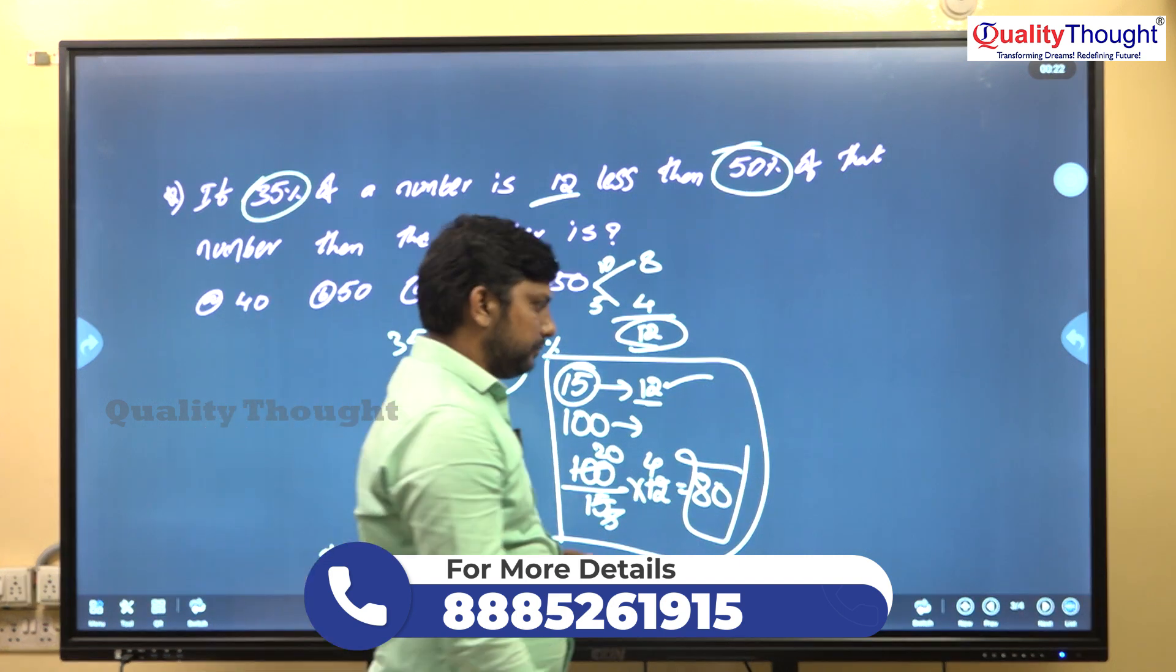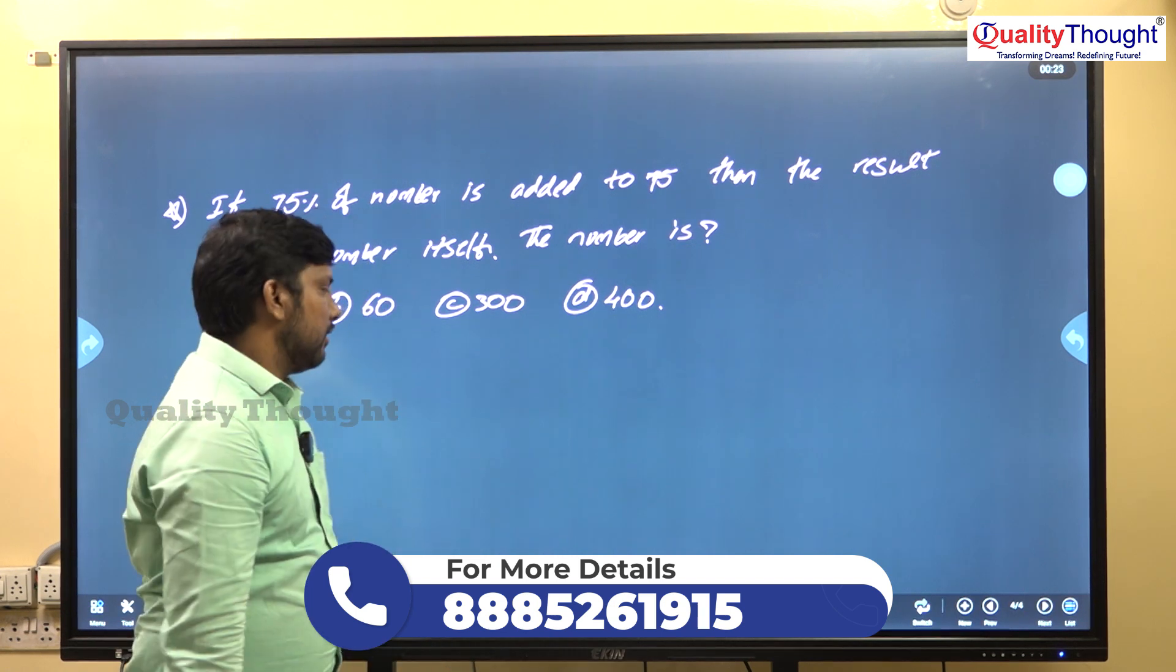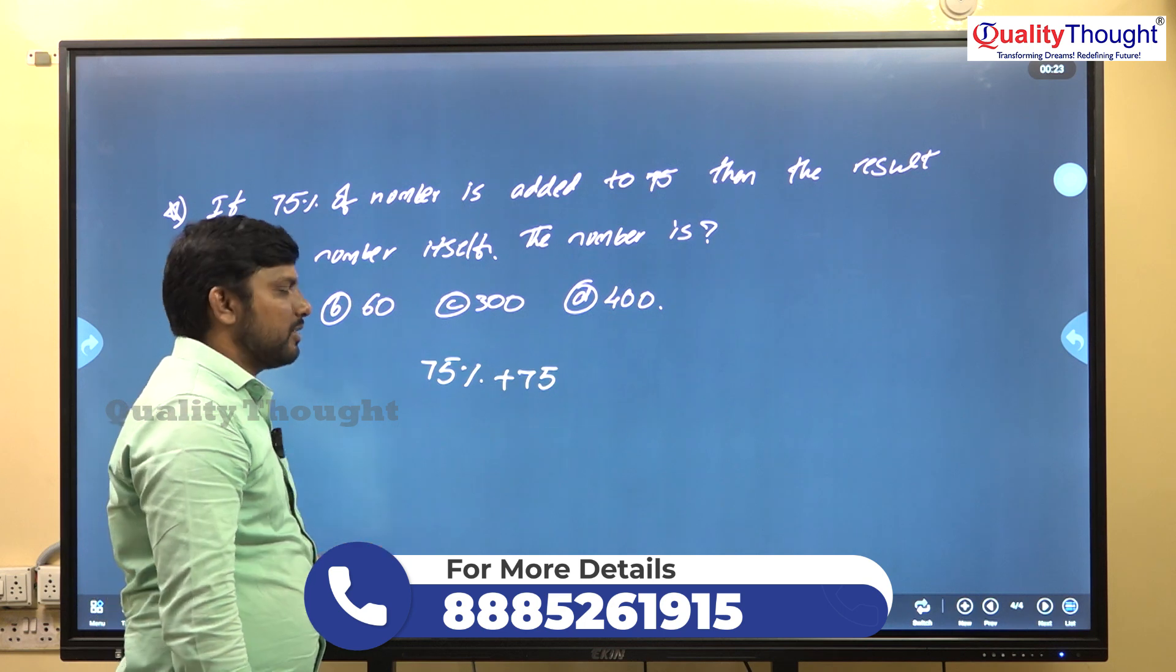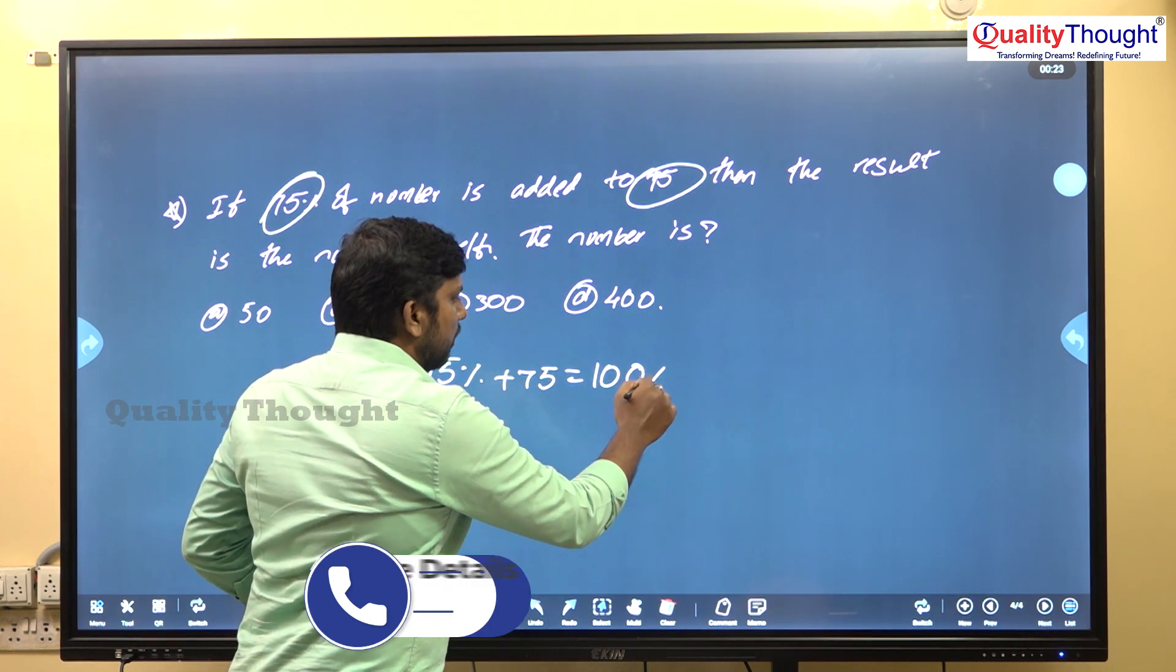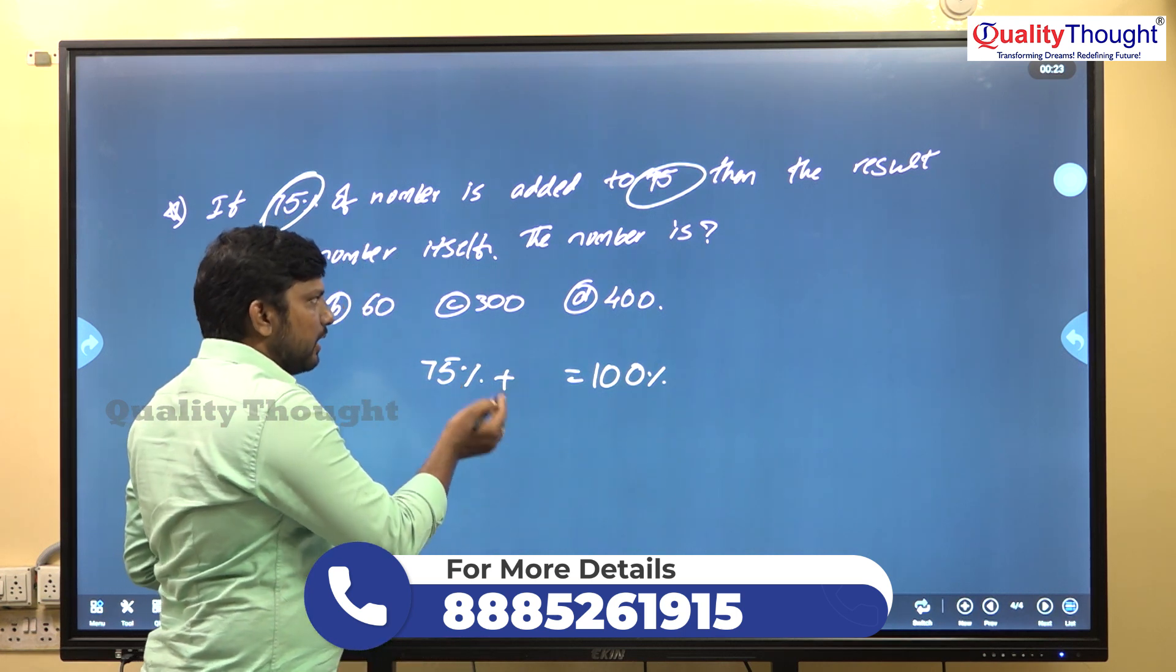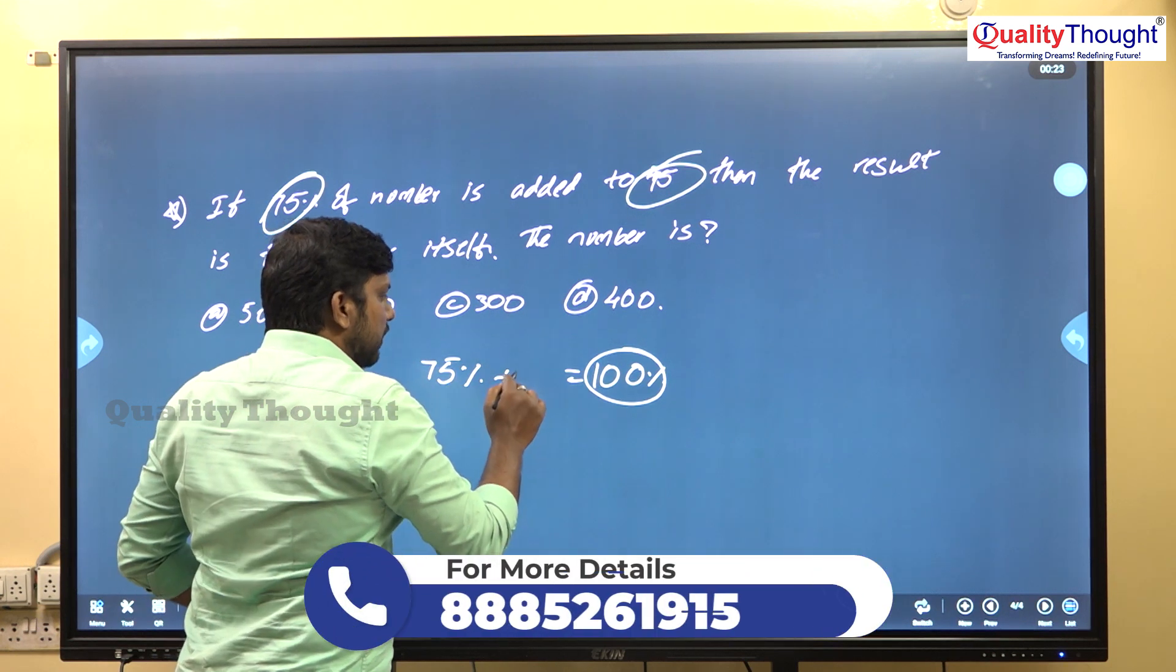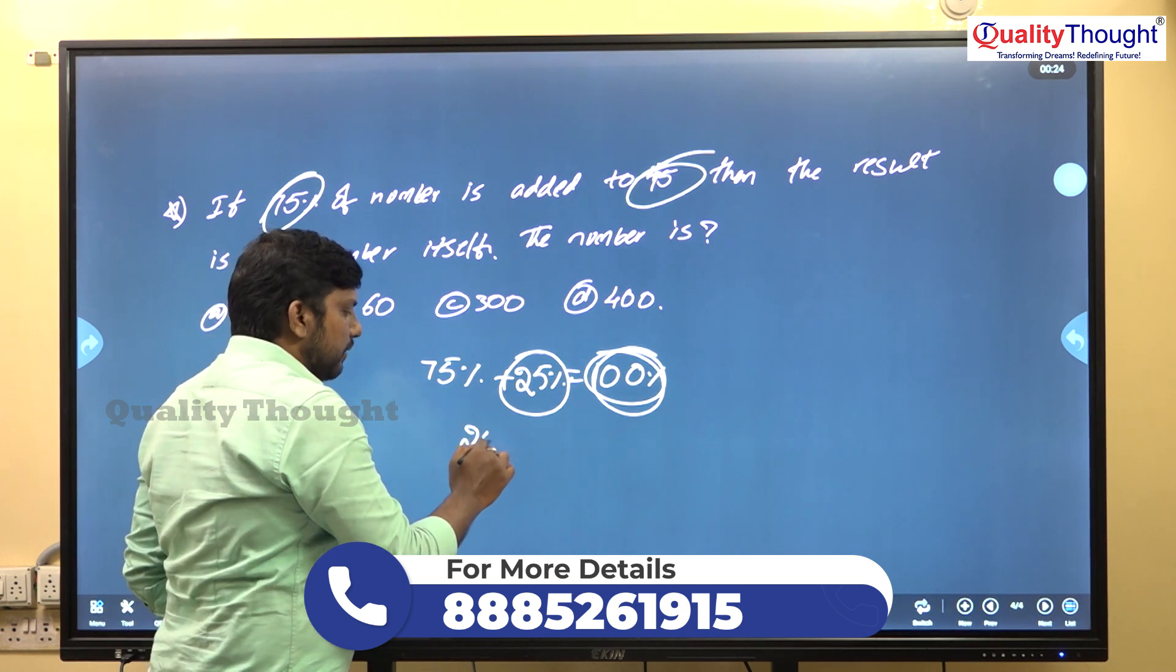Next problem: If 75 percent of a number is added to 75, then the result is the number itself. The question may not be very clear, but let me explain. If 75 percent plus how much percentage gives 100 percent? 75 is the value, 75 rupees is added. It's a number, not a percentage. Adding 25 percent to 75 percent gives 100 percent.